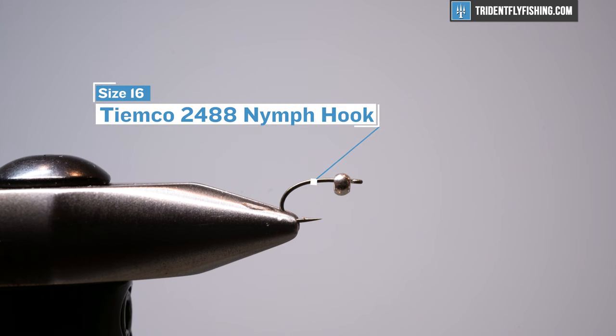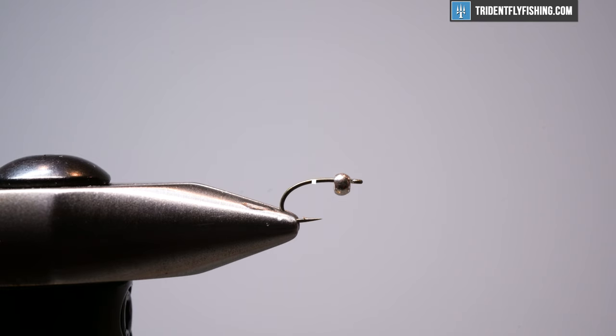So in the vise today, I have a TMCO 2488, which is just a curved wide gap nymph hook. And then I have a bead to match. This is a tungsten bead. You can tie it in brass. This is 2.4 millimeter or 3/32nds of an inch. So first thing we're going to do is start this thing off by laying down a thread base.